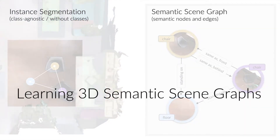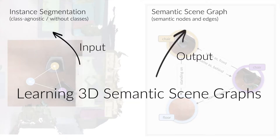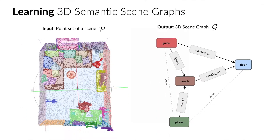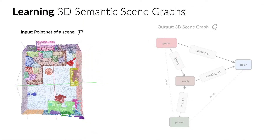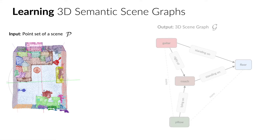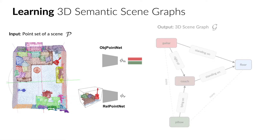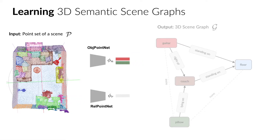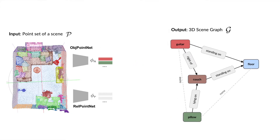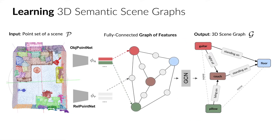We propose a method to learn such a graph from a 3D reconstruction. For this, we extract the point cloud for each object segment, as well as the points of the joint bounding box, to be fed into two different point networks. The features are then further processed with the GCN, which predicts the semantic labels for nodes and edges.